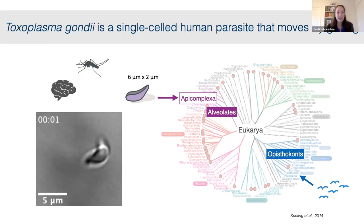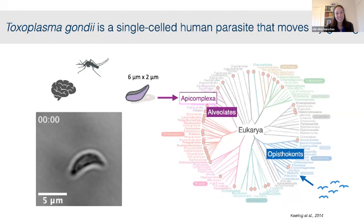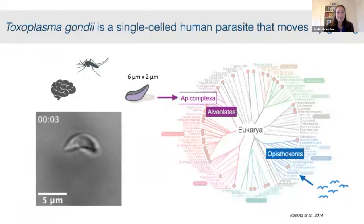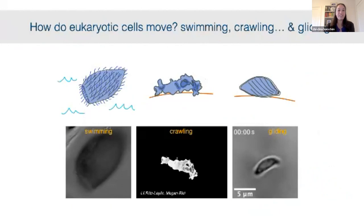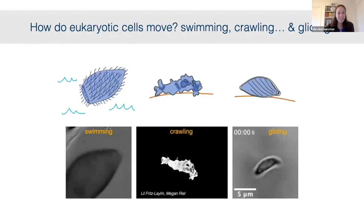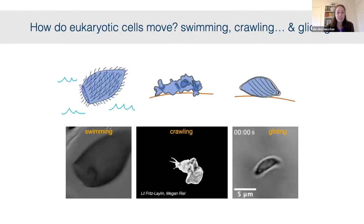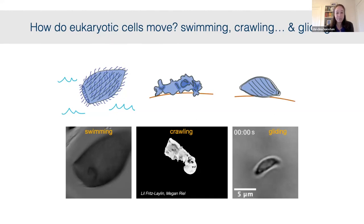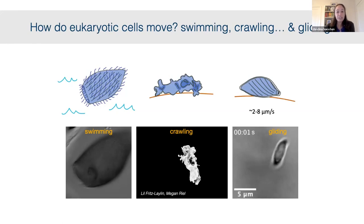During host infection, motile apicomplexan cells like Toxoplasma glide on substrates without changing shape. This is what first hooked me, because in my textbook view of eukaryotic cell motility, there are swimmers using cilia or flagella, and crawlers using actin-rich protrusions with lots of shape change — like a human neutrophil. But gliding happens on a substrate like crawling, yet without cell shape change and 20 times faster than the neutrophil.